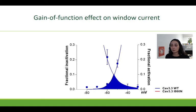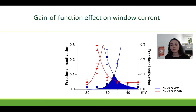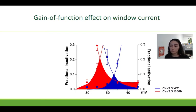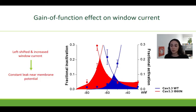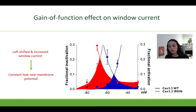We see that in the mutant, both the activation and the inactivation curves are left shifted and therefore result in a left-shifted and even increased window current here in red for the mutant. This constant leak around the resting membrane potential increases the calcium influx in neurons expressing these mutant channels, which could then lead to calcium toxicity during neurodevelopment, explaining the intellectual disability.